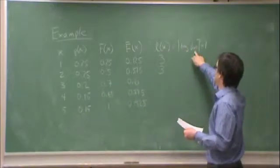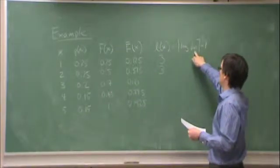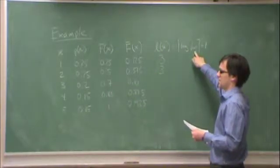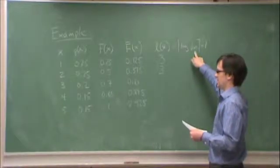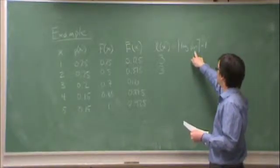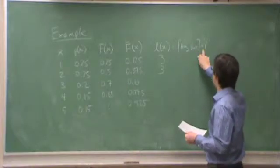For 0.2, log 1 over 0.2 is log base 2 of 5, which is somewhere between 2 and 3. So the ceiling of that must be 3, plus 1 is 4.